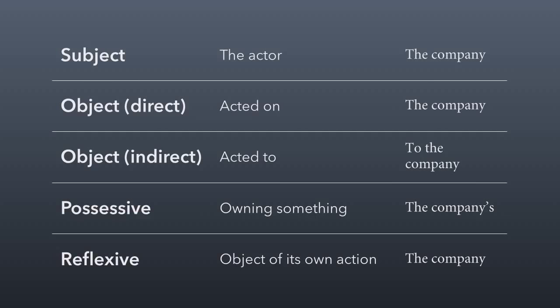The first four cases on this list are also known as the nominative case, the accusative case, the dative case, and the genitive case. But these names are easier to remember — you probably learned nominative, accusative, and so forth if you studied a foreign language. The basic rule is we keep nouns essentially the same unless they're possessive, no matter where we use them in the sentence.